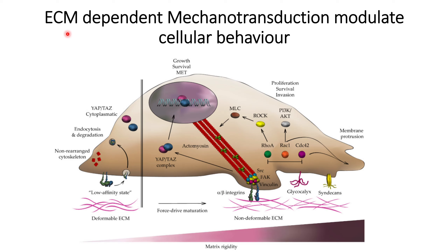Today we will discuss how ECM-dependent mechanotransduction leads to intercellular changes — what changes occur within cells that lead to the shift from epithelial to mesenchymal characteristics, and how different kinds of rigidity affect cells in different ways. So far we have discussed what changes occur in different kinds of cells because of changes in the composition of the ECM, and how those changes happen we will cover in brief in this video.